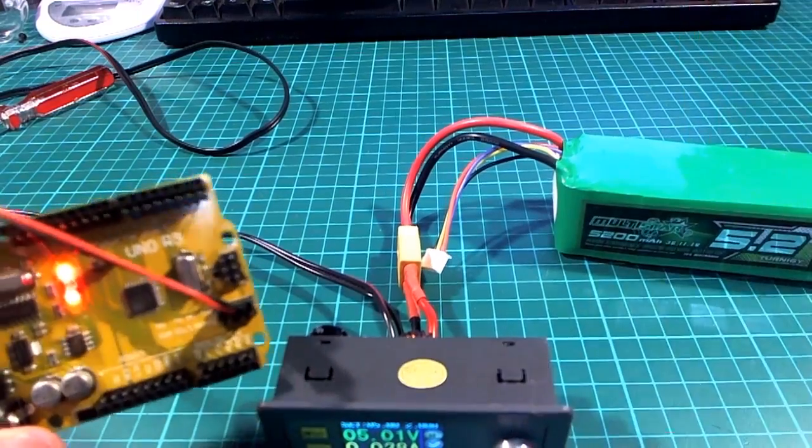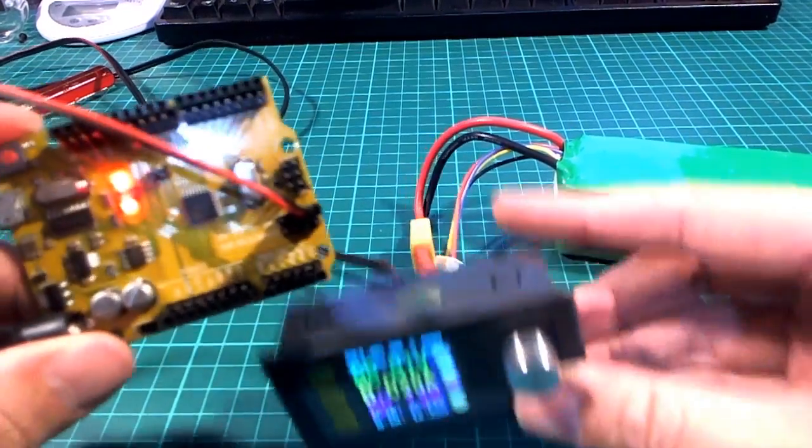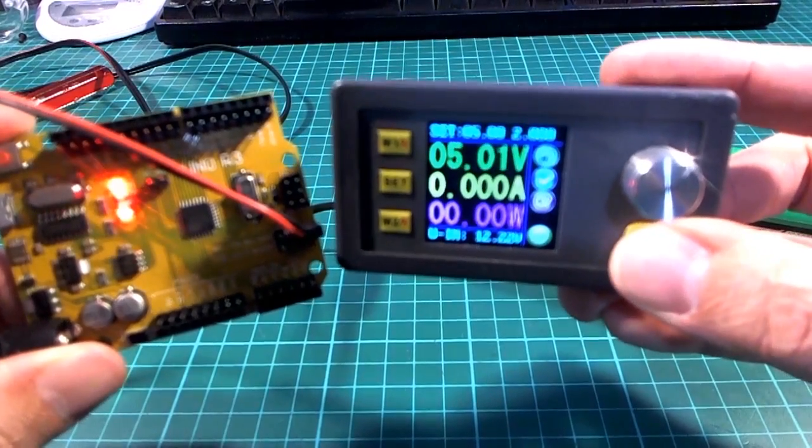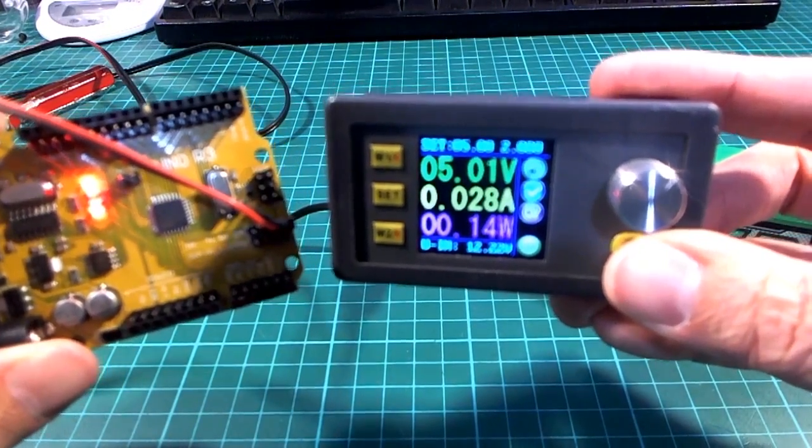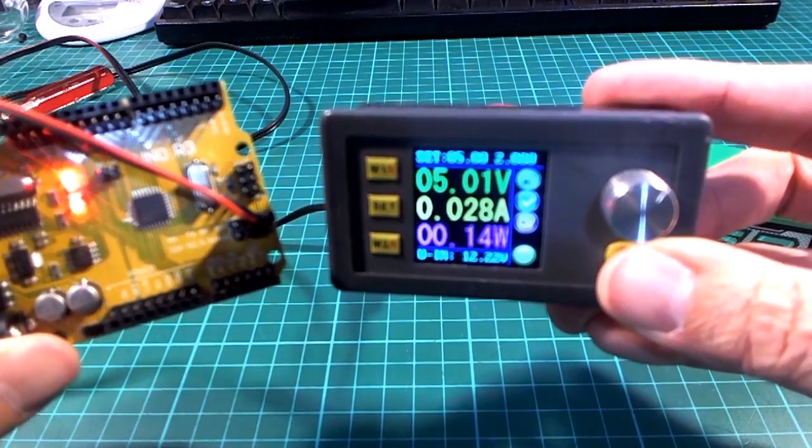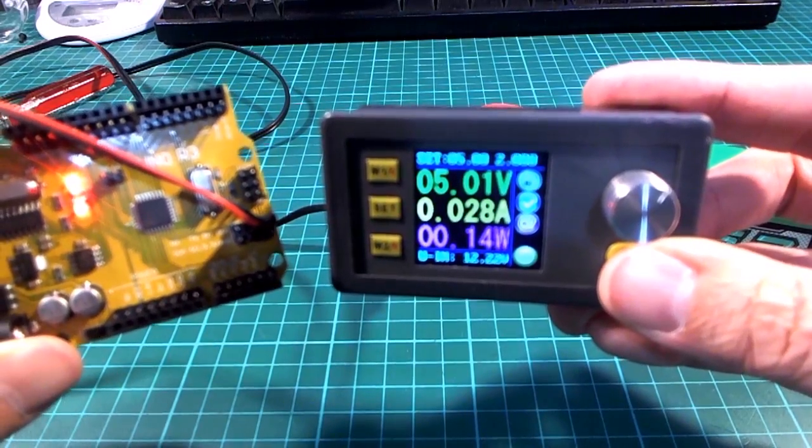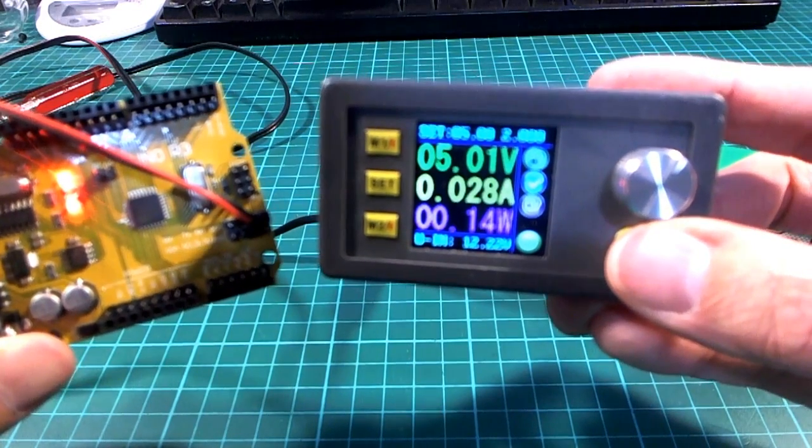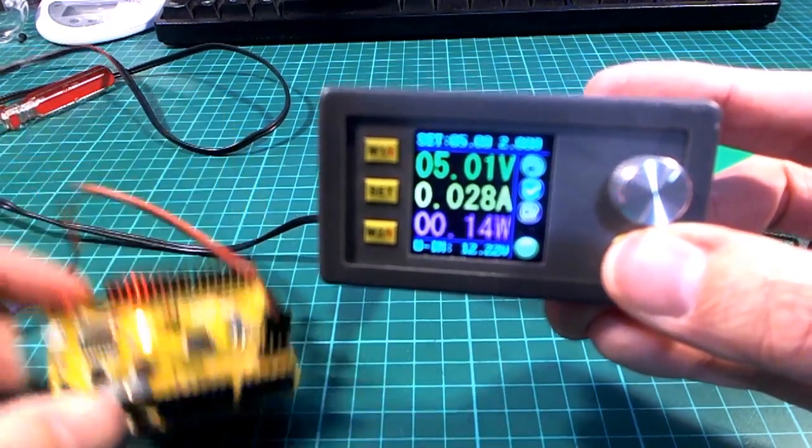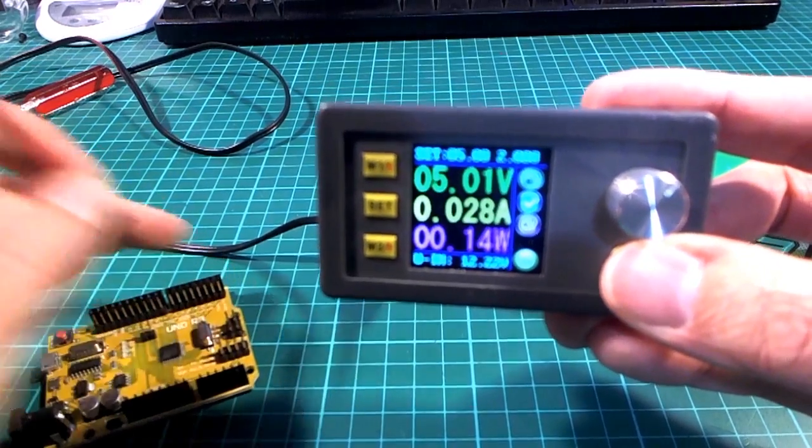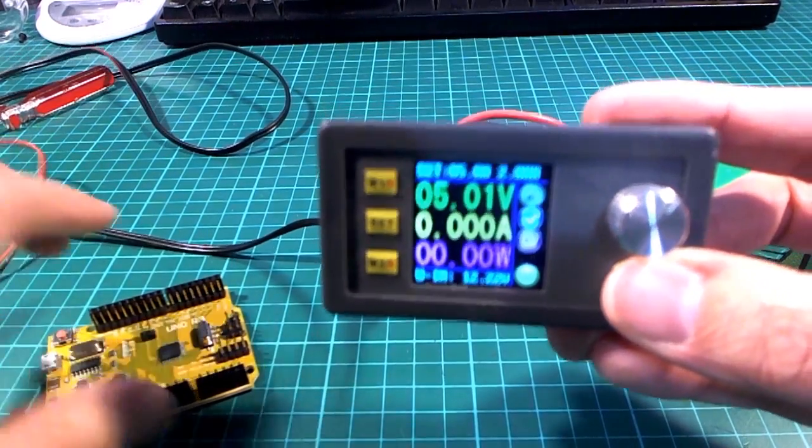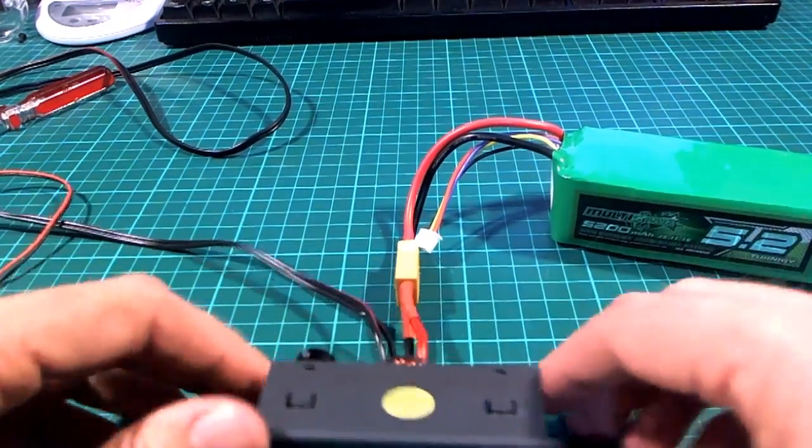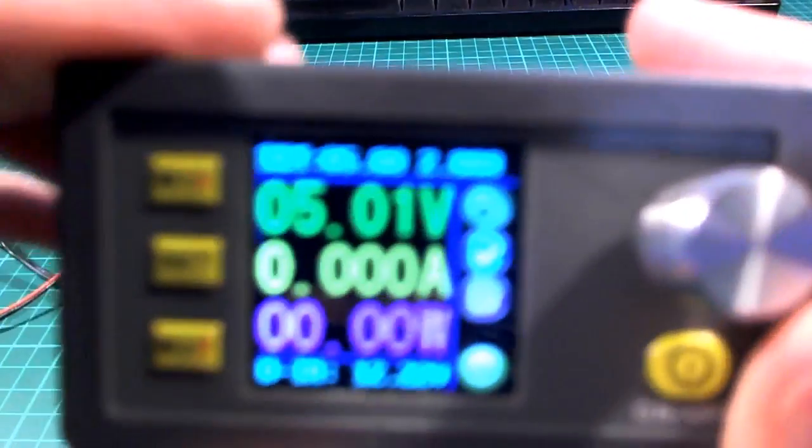So now what I was going to try and do just before was to plug this onto my Arduino. Alright, so we've powered the Arduino up and we can switch it off and on using this switch here. This is kind of handy to let us see what current is being drawn by that as well, so it's about 30 milliamps or so, 28 milliamps.